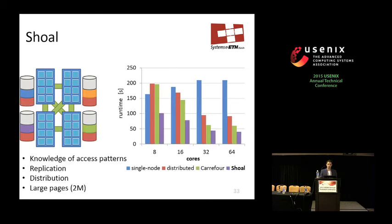Finally, Shoal already knows access patterns for the entire program at startup, so it can immediately decide which arrays should be replicated, partitioned, or distributed. It can also use hardware support such as large pages if available, giving a further 20% improvement over Carrefour, which has to guess programmer intent based on online observation.